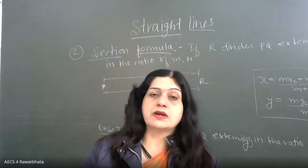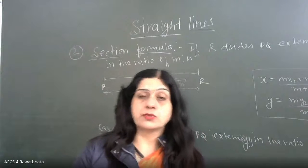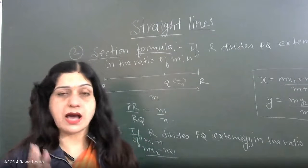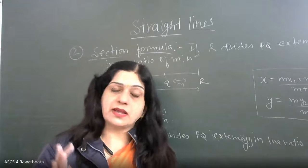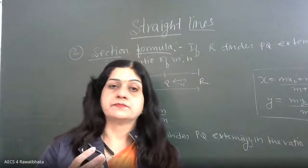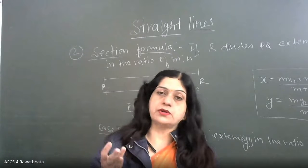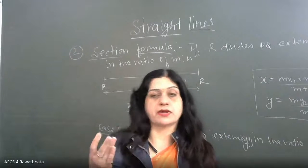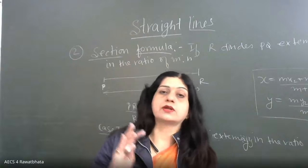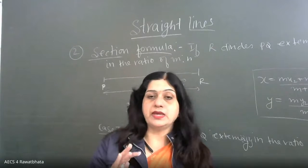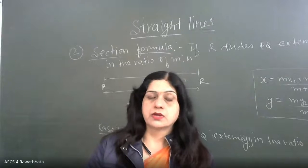If your point R is the midpoint of PQ, then in place of M and N you will be taking 1. So in that case the coordinates become X1 plus X2 upon 2 and Y1 plus Y2 upon 2. That's the only difference if it is the midpoint of this PQ.